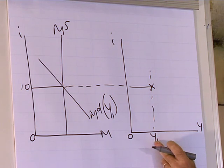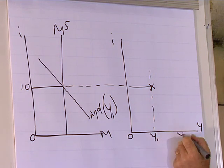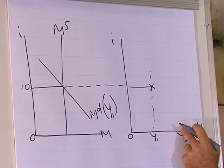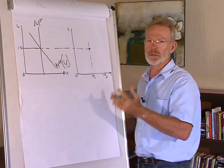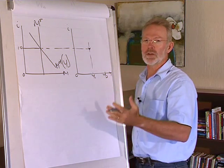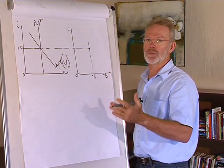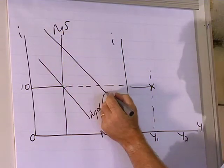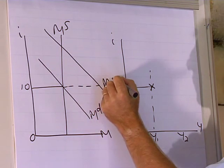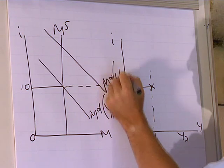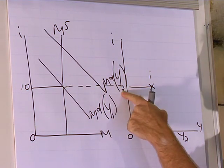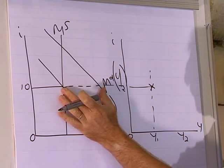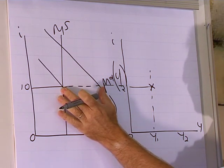If there's an increase in the level of production to Y2, the demand for goods and services will increase. This increase in demand for goods and services will lead to an increase in the transactions demand for money. Therefore, the demand for money curve will shift to the right, creating an excess demand for money in the financial market.